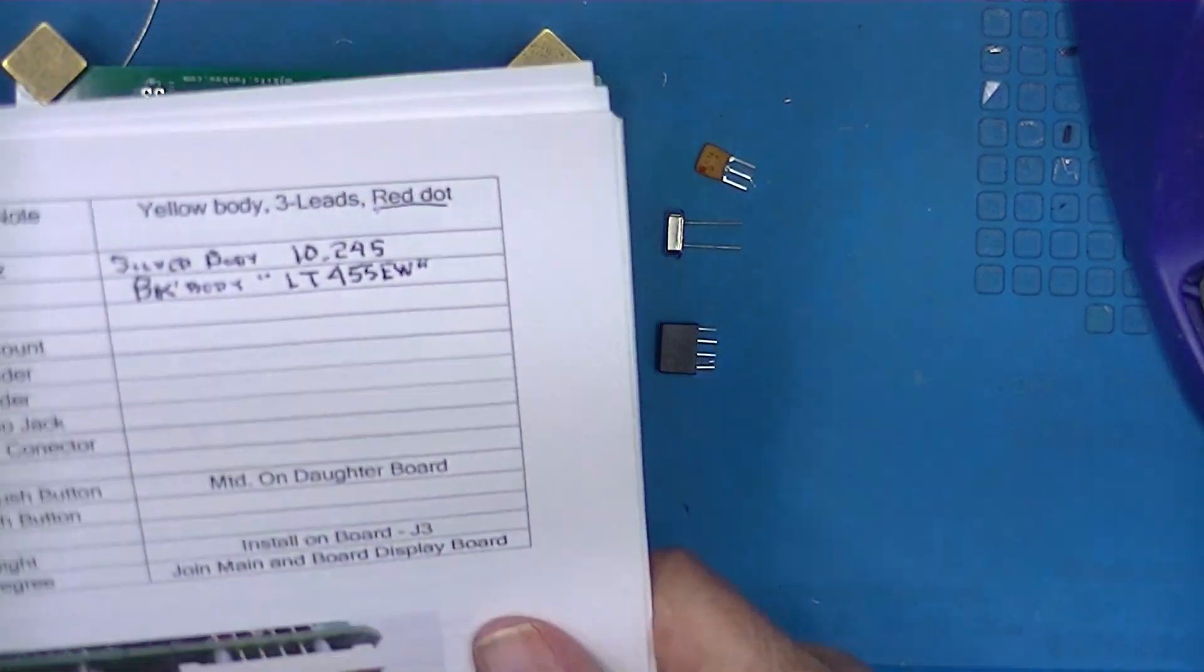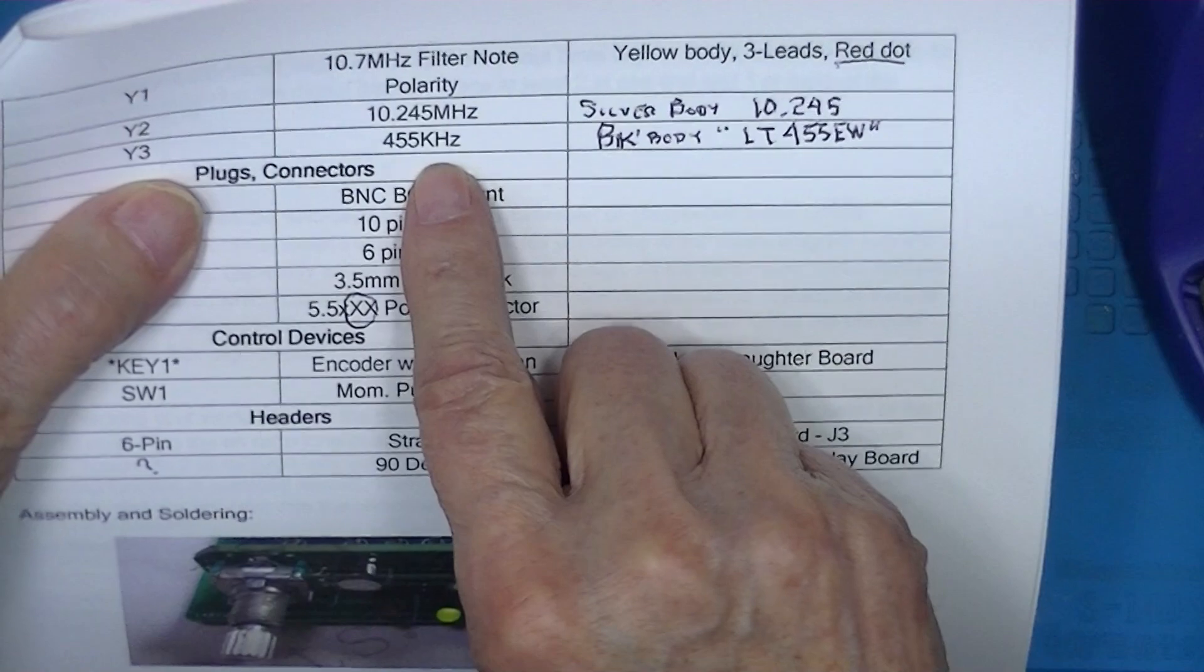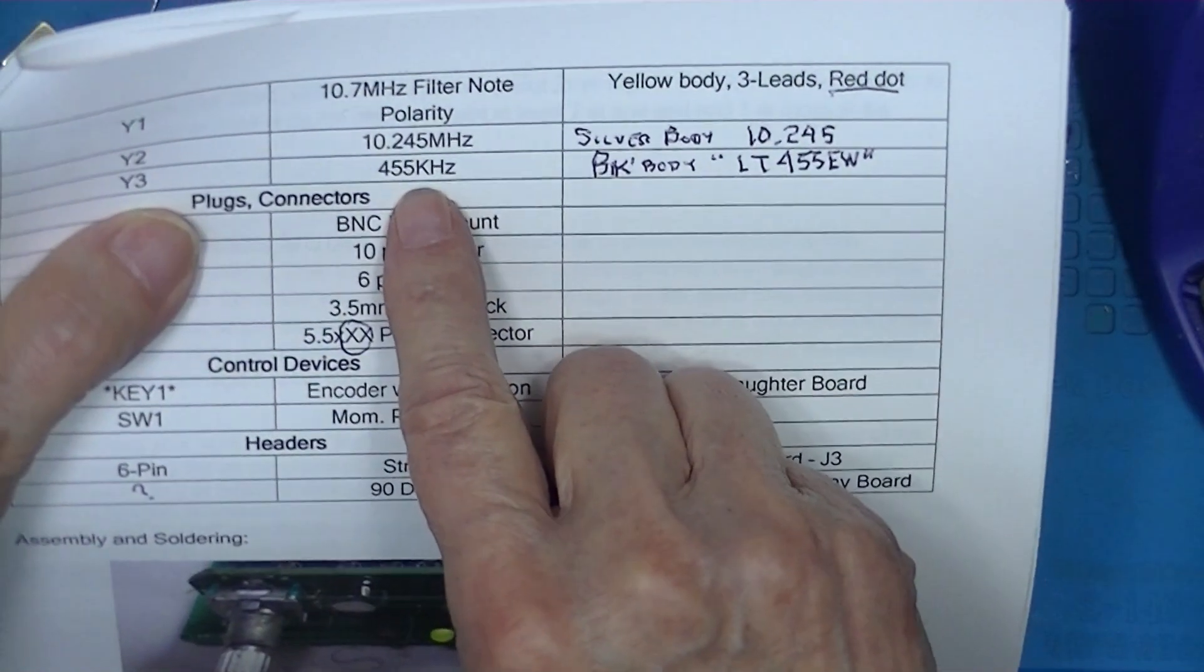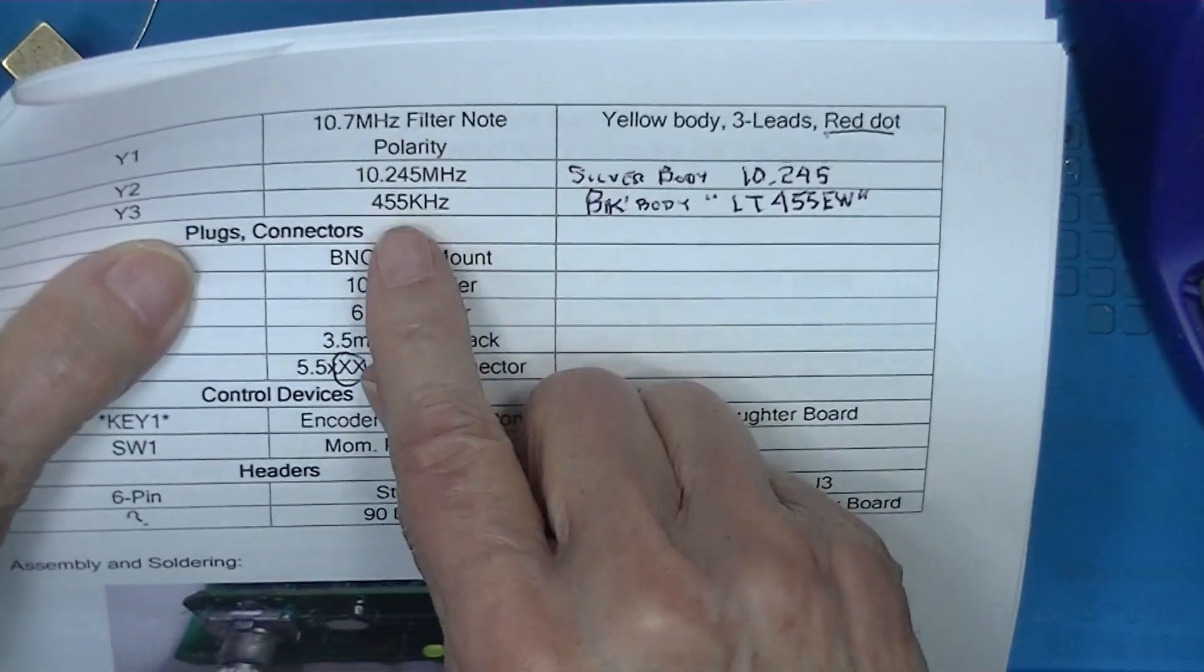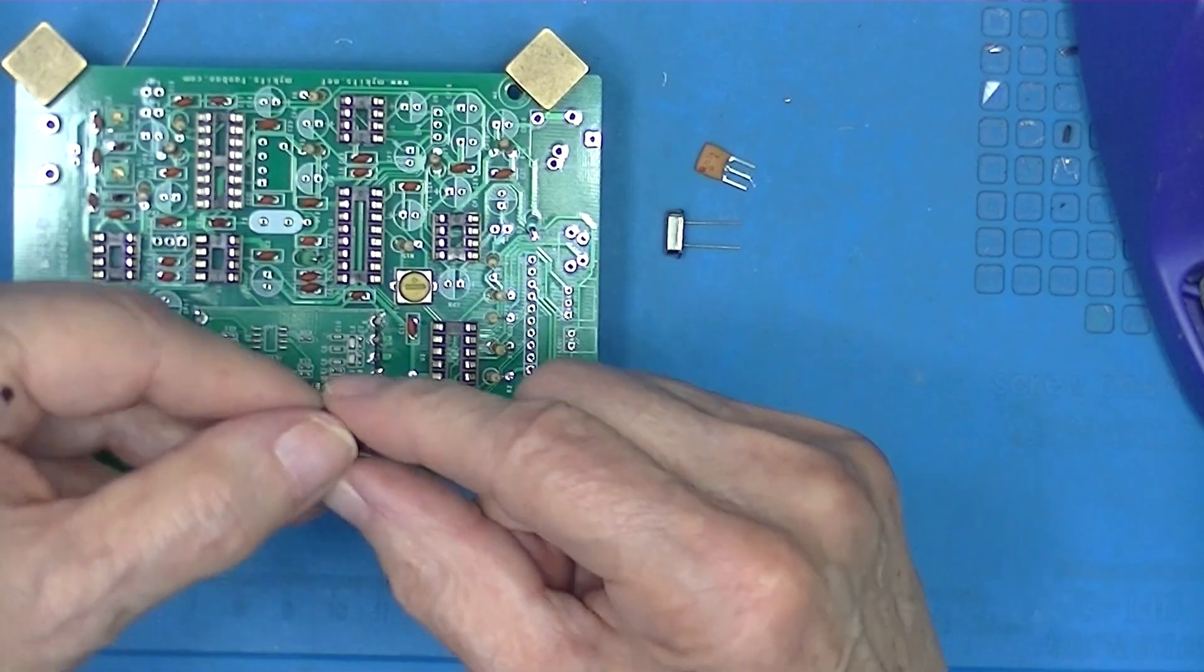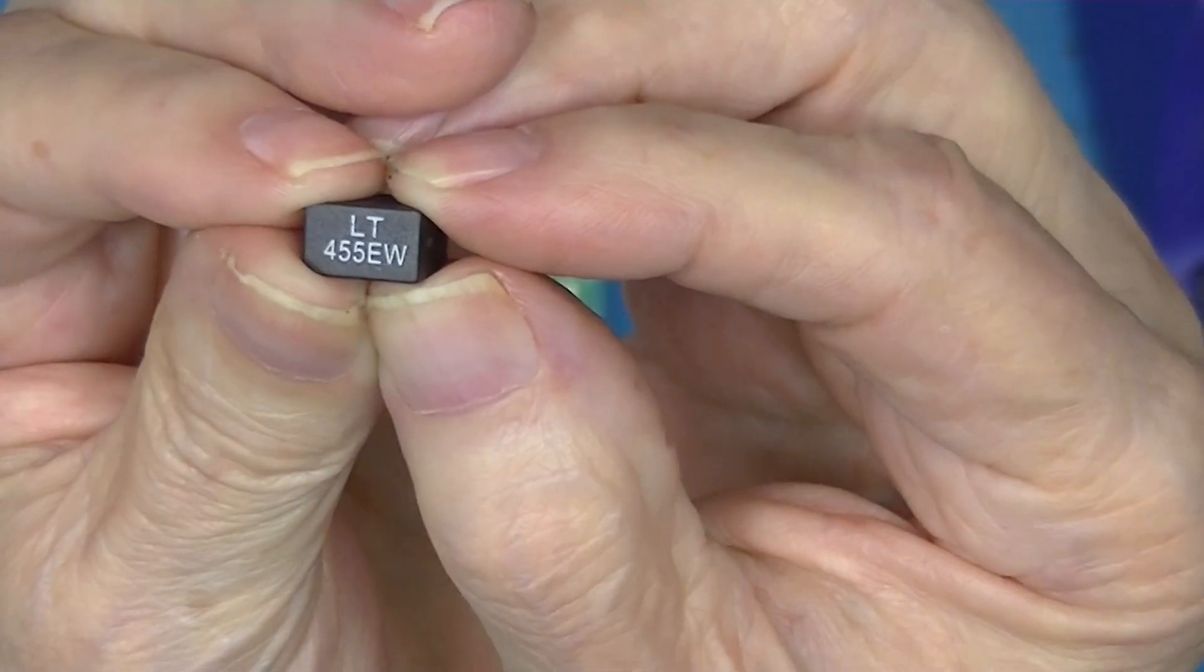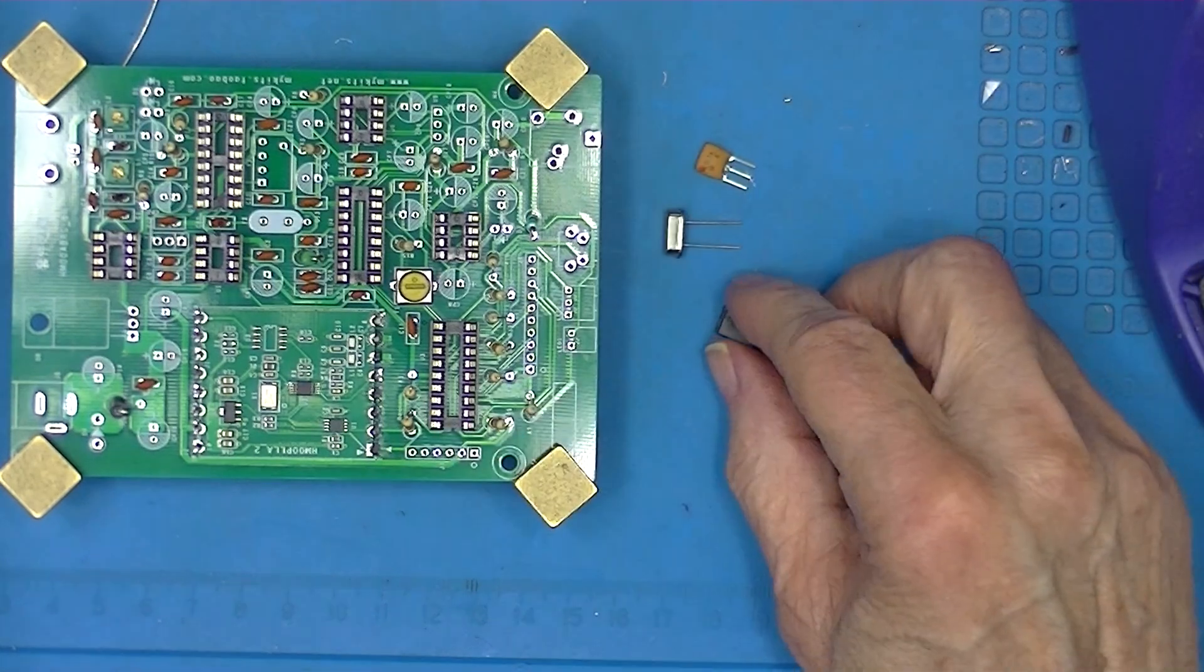And we have a 455 kilohertz bandpass filter. Both of these are equivalent to bandpass filters. It's a black body gizmo marked LT455EW.